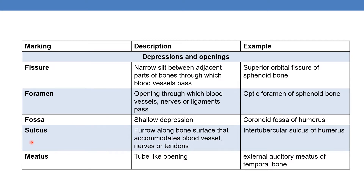Next is sulcus — a furrow along the bone surface that accommodates blood vessels, nerves, or tendons. An example is the intertubercular sulcus of the humerus.